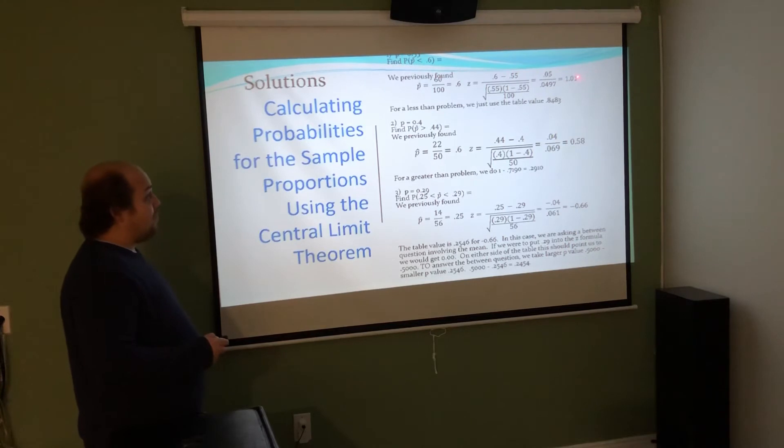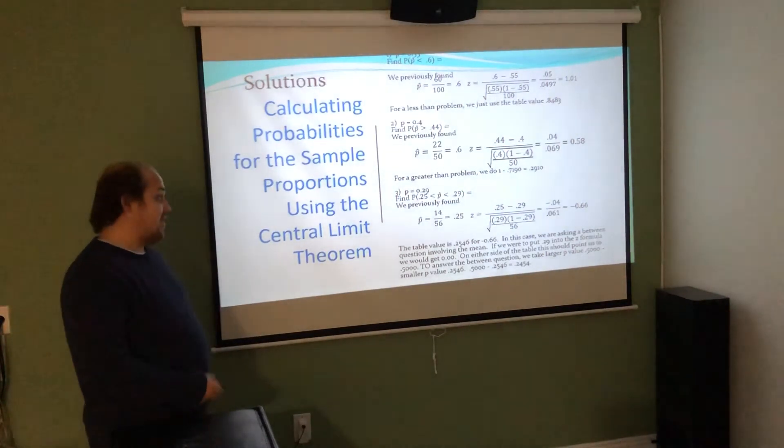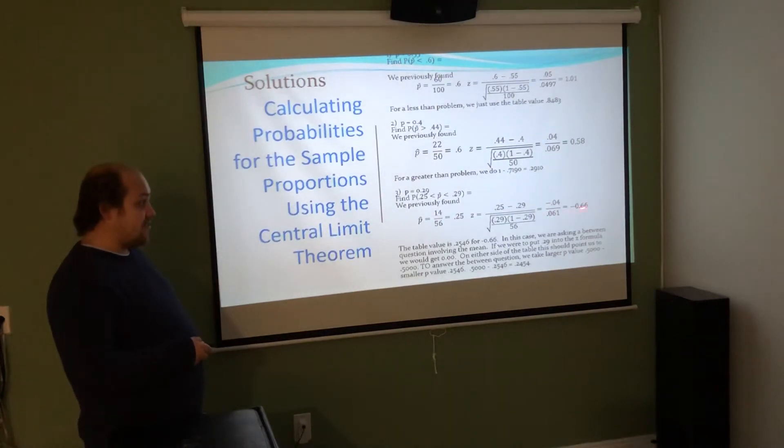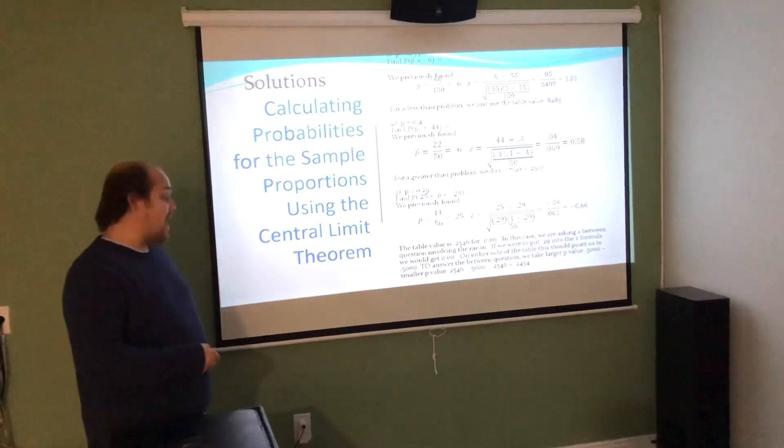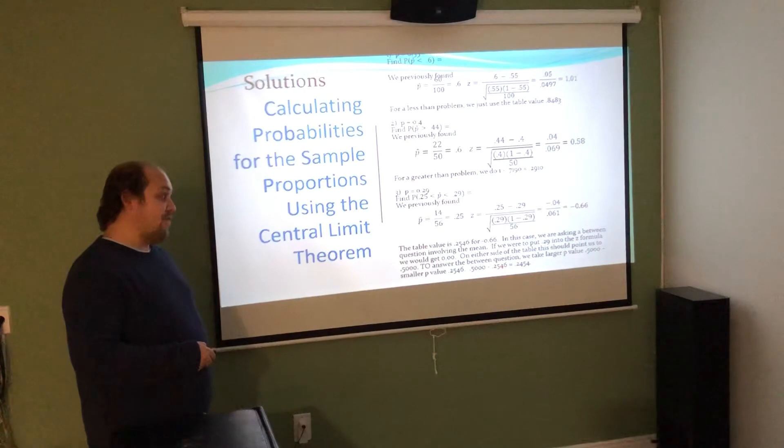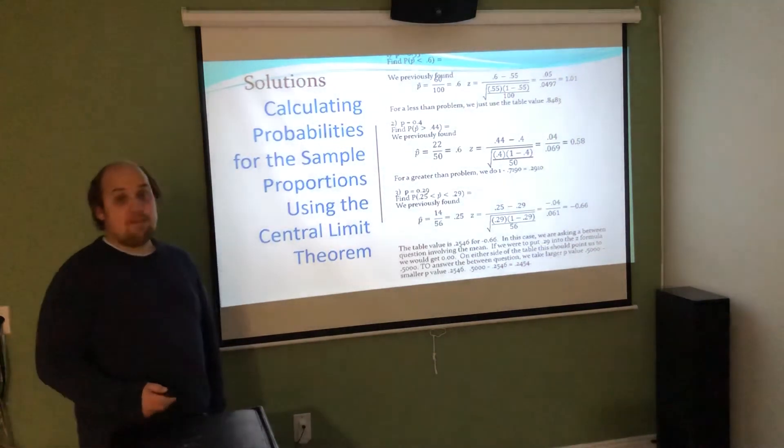We previously found a z-score of 1.01. For a less than problem, we just look up 1.01 in the table, which is 0.8383. In problem two, we found a z-score of 0.58, which gives us a p value of 0.7190. We do 1 minus that for a more than question to get our final answer of 0.2910. For number three, we found the z-score of negative 0.66, which has a p value of 0.2546. If we take 0.29 that is the mean with a z-score of 0.00, we find 0.500 is associated with 0.00. Larger p value 0.500 minus smaller p value 0.2546 is how I get the correct final answer for the between probability, 0.2454.